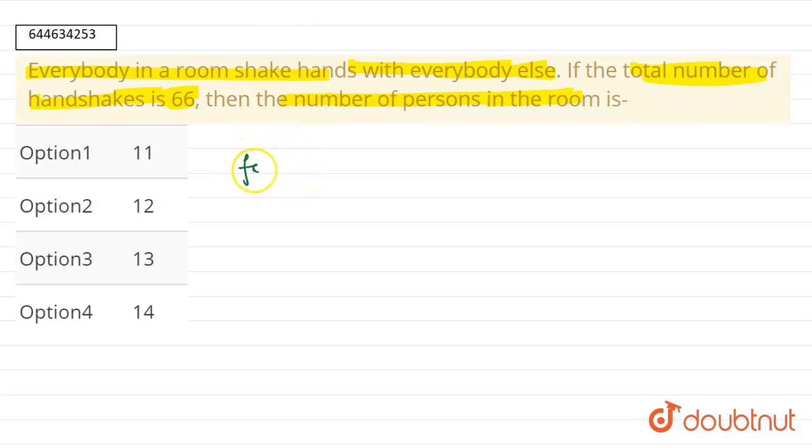So we know that for each handshake we require two persons, right? And let's say the total number of persons in that room are n.